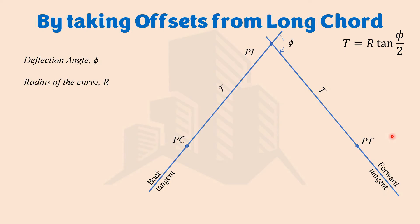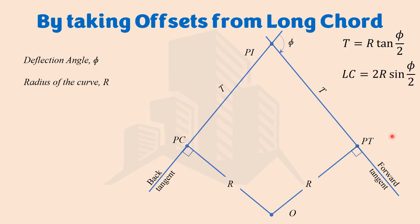Since the radius is given, we can mark the center of the curve. Because the offsets are to be marked from the long chord, we mark the long chord, which is the straight distance between BC and BT. The formula for the long chord involves both the radius and the deflection angle — both known — so we can calculate and mark the long chord.